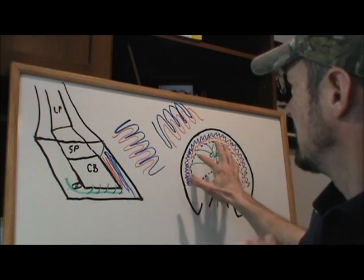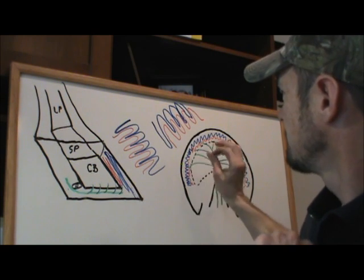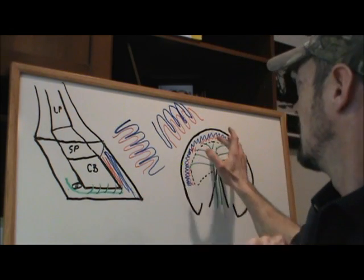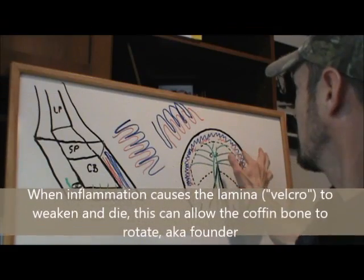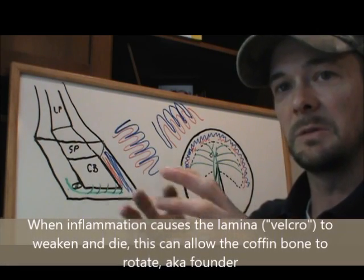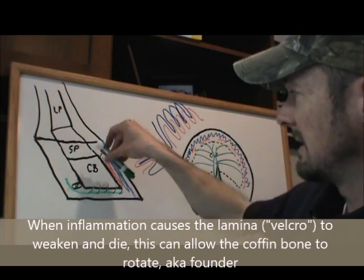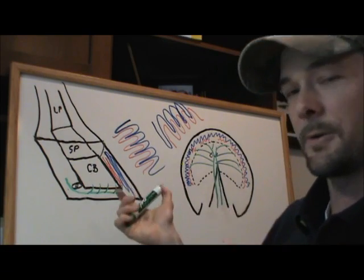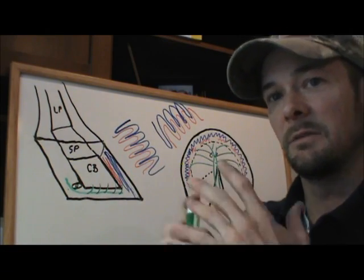So when you have enough inflammation in that sensitive lamina that it loses its ability to function as either weakened or dead, you can see how when you start to lose a little bit of Velcro and you have that weight of the horse pushing down, all of a sudden you lose some ability to hold that bone in place and it can actually then tear away and rotate or founder in the foot. You've now crossed over from laminitis to a permanent condition of a foundered horse.